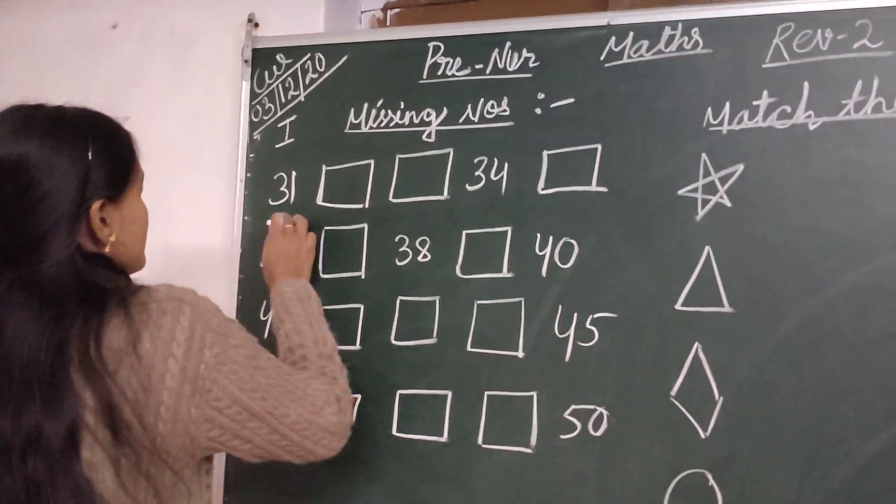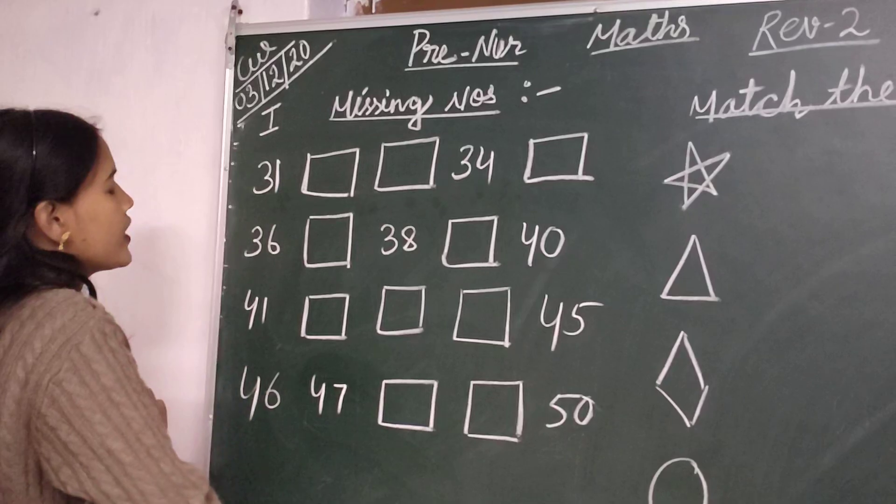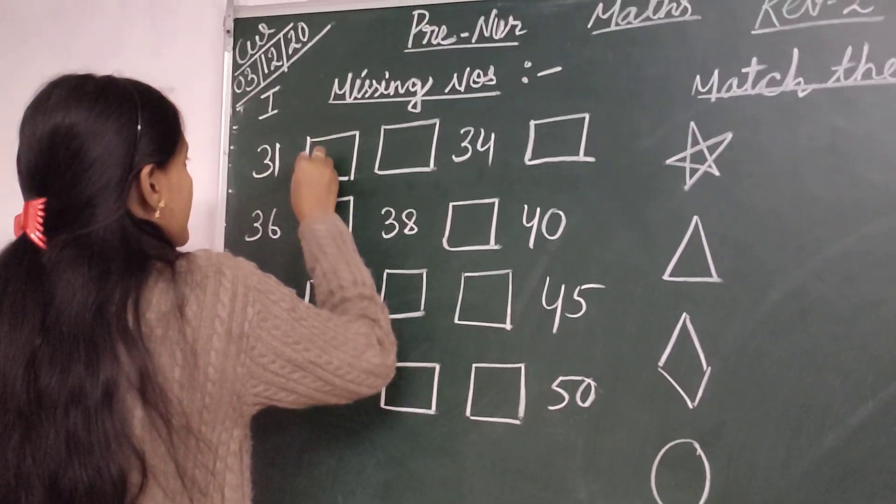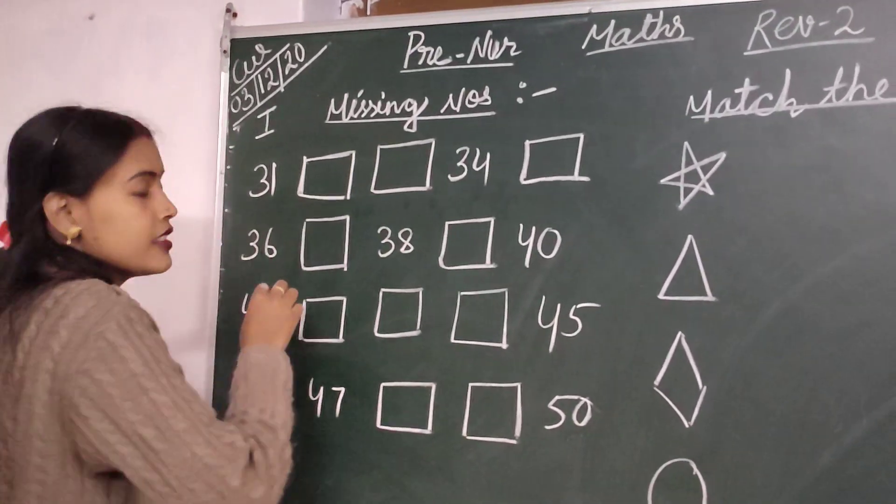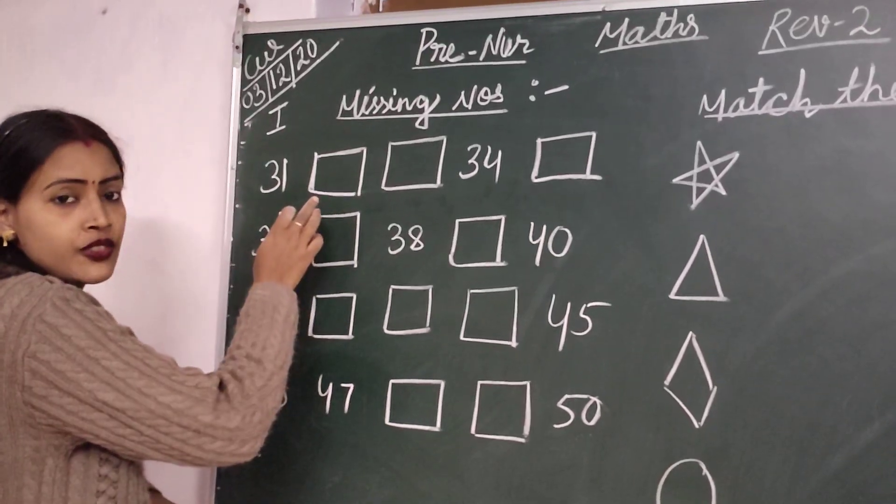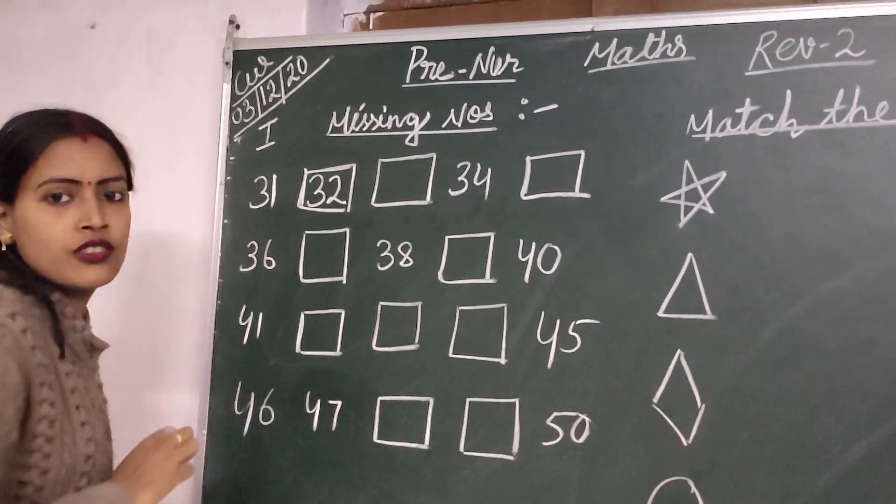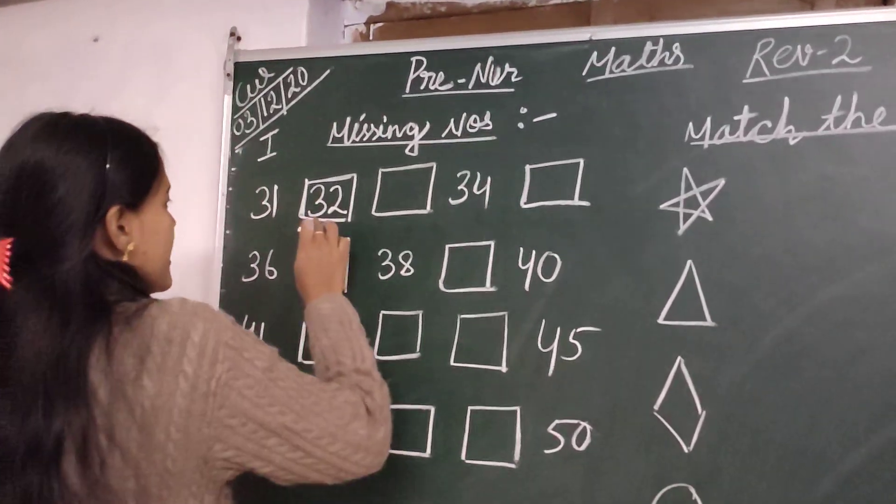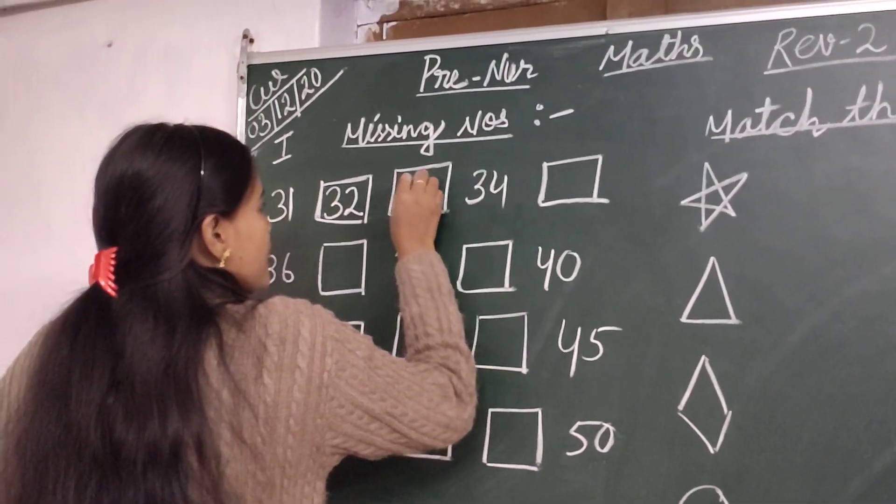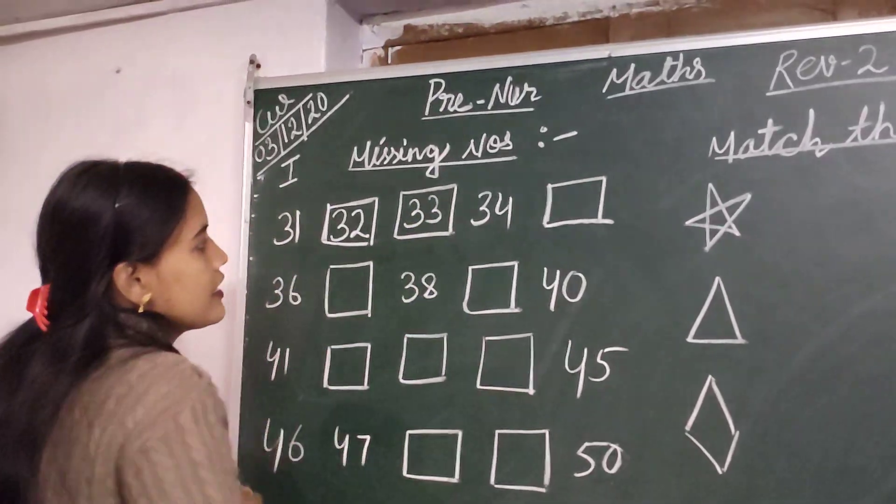So children, first number is 31. 31 come after 32. So children, 32 is missing. Okay, so write down 32, 32. Next, 32, 32 come after 33, 33.